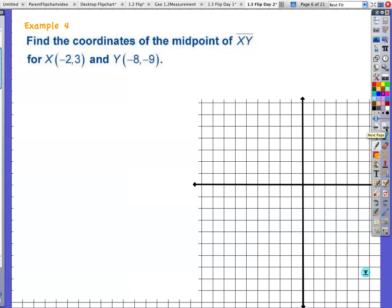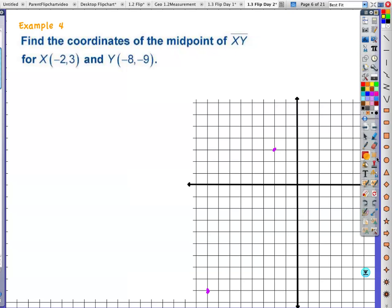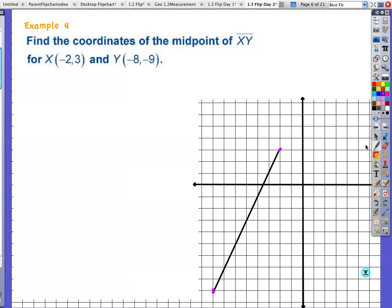Example 4. We're going to do it again. Find the coordinates of the midpoint of segment XY. If X is at (-2, 3). (-2, 3). And Y is at (-8, -9). Okay. And then we make our line. Check this out. Make a nice little line from here to here. Okay. So basically add your X values, divide by 2. Add your Y values, divide by 2. This is -10 over 2. This is -6 over 2.